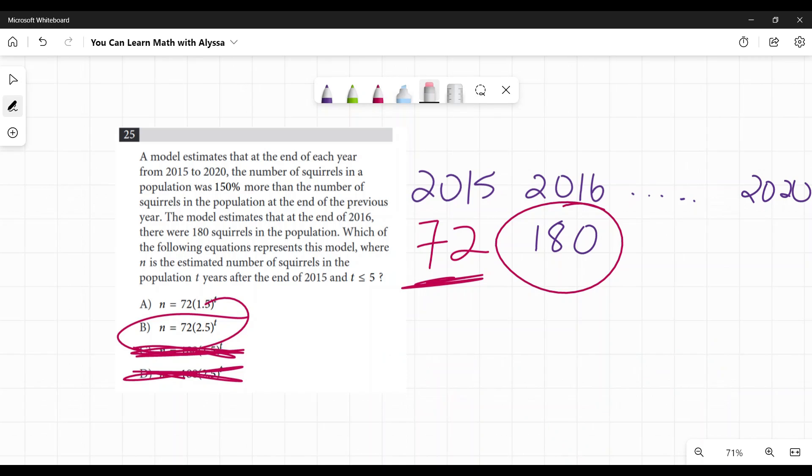If this was a question where you didn't have those options there, or if they were a little more varied, the way that you would get this is an increase of 150%, 150% or 1.5, 1.50, same thing, is being added to that 72. They're not asking you what is 150% of 72. They're saying I started with 72 and then I added 150% of 72.